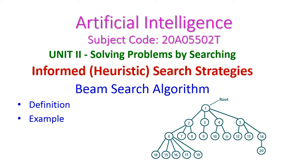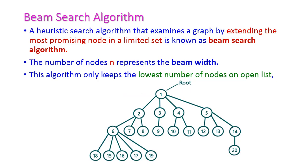In today's artificial intelligence class, we will see the beam search algorithm that comes under the informed heuristic search strategies from the second unit. We will see the definition of beam search algorithm and one simple example to explain it. A heuristic search algorithm that examines a graph by extending the most promising nodes in a limited set is known as the beam search algorithm.